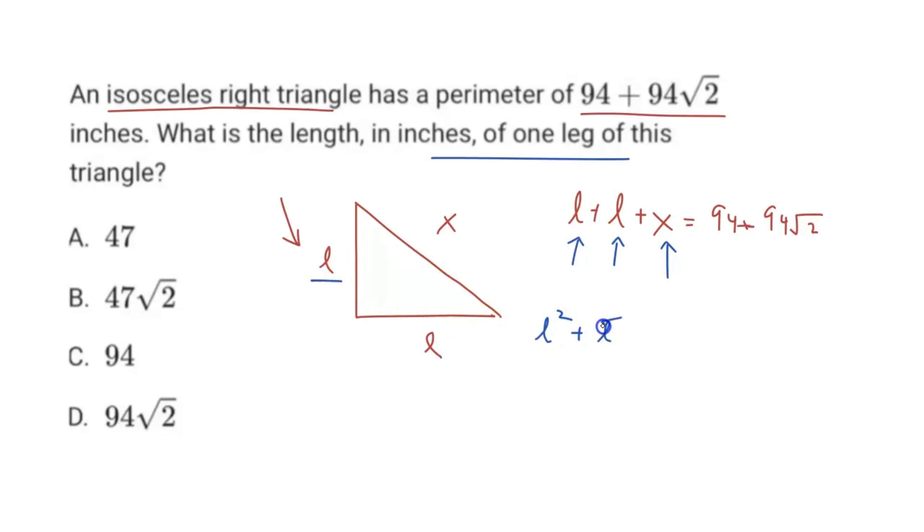And so this here is just 2L². Let me write 2L² = X². And then we just isolate and solve for X. So we take the square root of both sides. We're left with the square root of 2, and then the square root of L² is just L. So that is equal to X: √2 × L = X. That is our final portion.